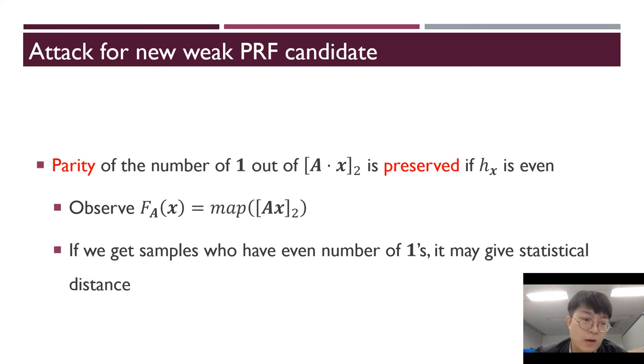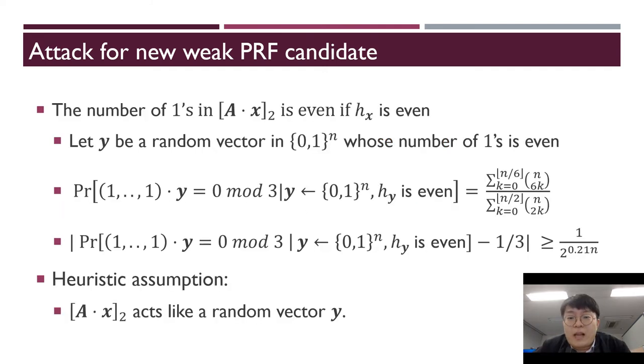Now we observe weak PRF, which is map of A times x. If we get samples that have an even number of 1s, it may give statistical distance. The number of 1s in A times x is even if h_x is even. Let y be a random vector in m-bits whose number of 1s is even. The following conditional probability is also a fraction of sum of combinations.